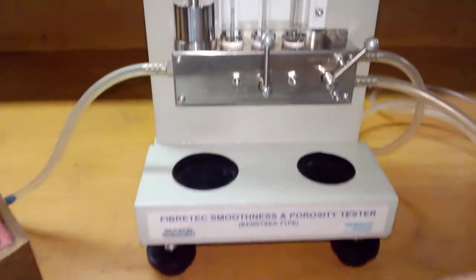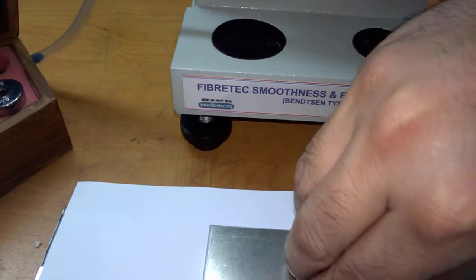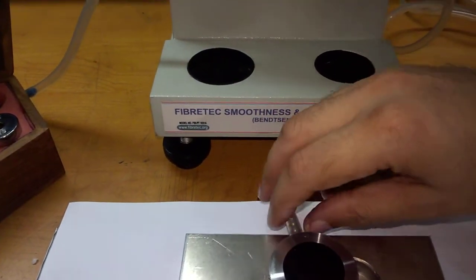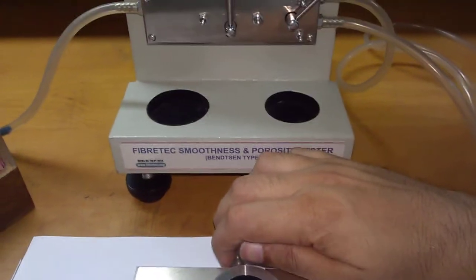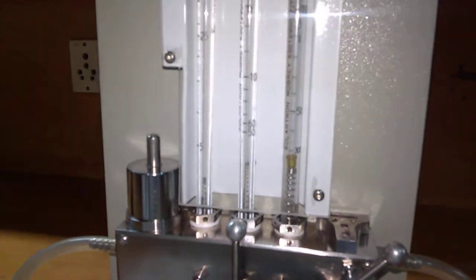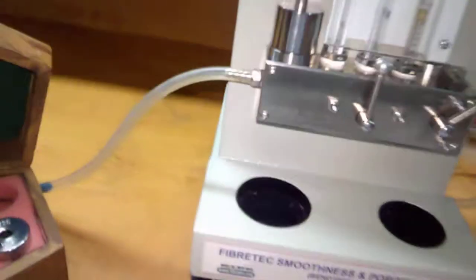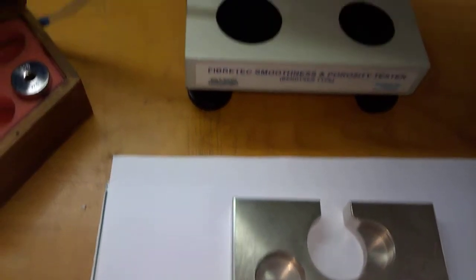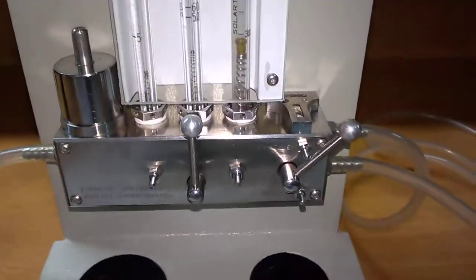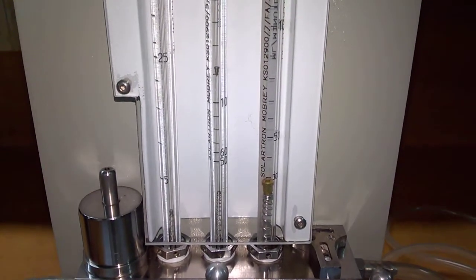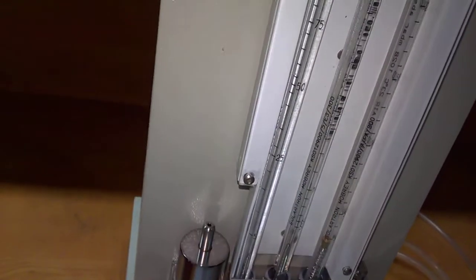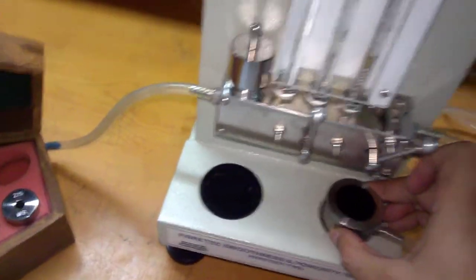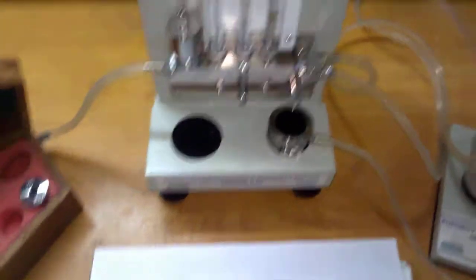We can use it for different positions. Here in this position, it is 160 ml per minute. We can change the position like this. It is 120 ml per minute. This is how you check the smoothness. We can place the head over here. It has to be taken very carefully.